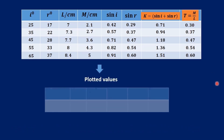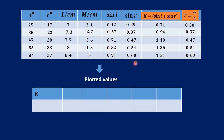For the plotted values, we need the values of k. The values are all decimals and it will be very difficult to plot decimals on the graph accurately, so we convert them to standard form. We move the point twice to the right, so we have 71 times 10 to the exponent negative 2. The next values are 94, 118, 136, and 151, all times 10 exponent negative 2.